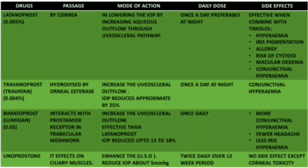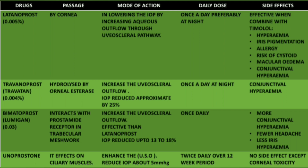Bimatoprost is used once daily. Its side effects include more conjunctival hyperemia, fewer headaches, and less iris hyperemia. Conjunctival hyperemia is common in three of these drugs. The fourth drug is unoprostone, which effects the ciliary muscles — this is not mentioned in all books. It reduces IOP by about 5 mmHg and is used twice daily over a 12-week period.